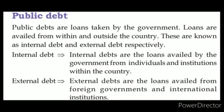There may be some imbalance between public revenue and public expenditure. When expenditure increases, the government may take loans from other institutions or persons. Public debts are the loans taken by the government. There are two kinds of public debts: internal debt and external debt.